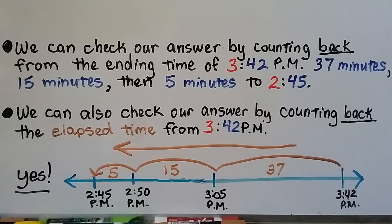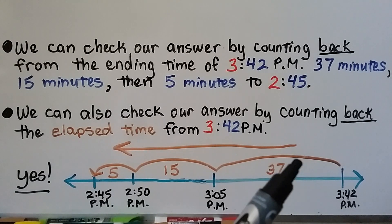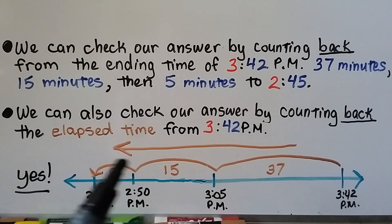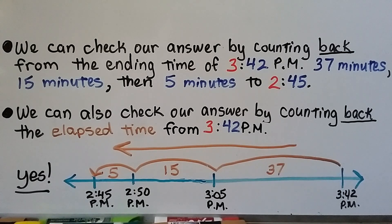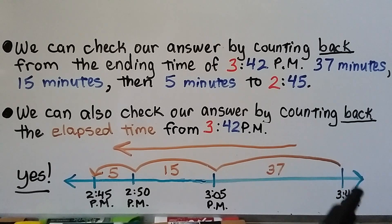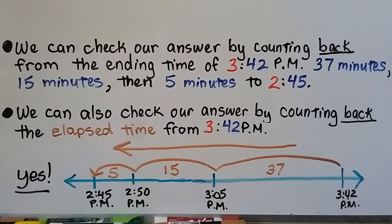Emma finishes her homework at 3:42 p.m. We can check our answer by counting back from the ending time of 3:42 p.m. — subtracting the 37 minutes, the 15 minutes, and the 5 minutes — back to 2:45 p.m. We can also check by counting back the entire 57 minutes of elapsed time from 3:42 p.m., and we land at 2:45 p.m., confirming we did it correctly.